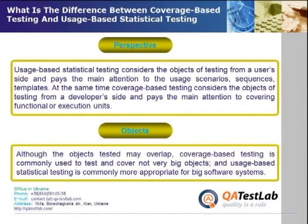At the same time, coverage-based testing considers the objects of testing from a developer's side and pays the main attention to covering functional or execution units. Although the objects tested may overlap, coverage-based testing is commonly used to test and cover smaller objects, while usage-based statistical testing is more appropriate for big software systems.